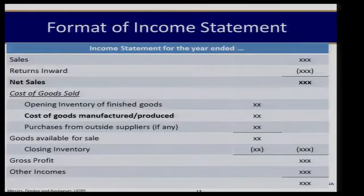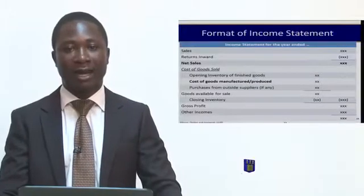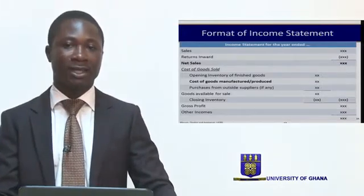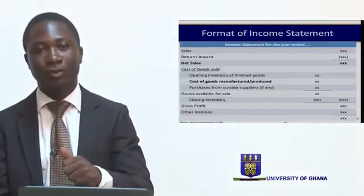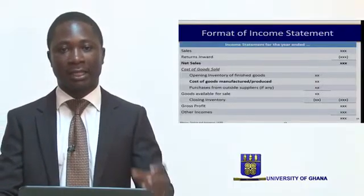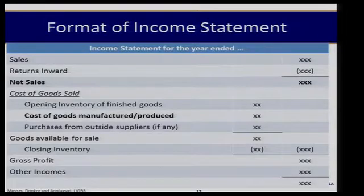In preparing the income statement, you have your sales — considering any returns. In determining the cost of goods sold, the opening inventory of finished goods ought to be added to the cost of goods manufactured to arrive at the cost of goods available for sale. If the organization made any purchases of finished goods, those purchases ought to be added as well to arrive at the cost of goods available for sale. Subtracting our closing inventory will then give us the actual cost of goods sold.